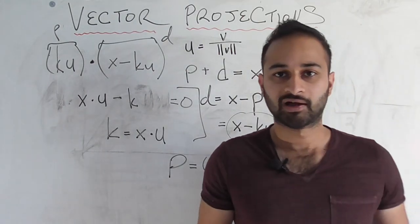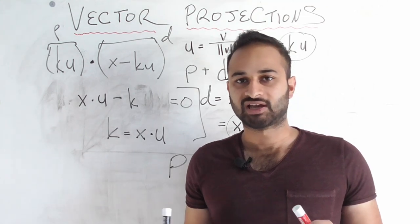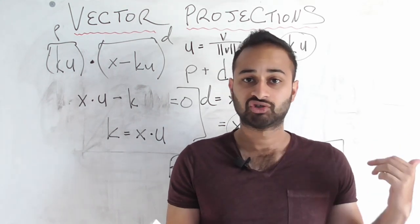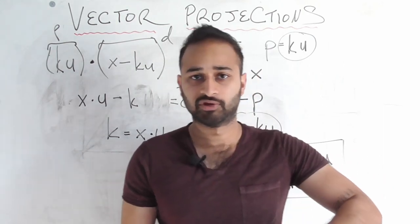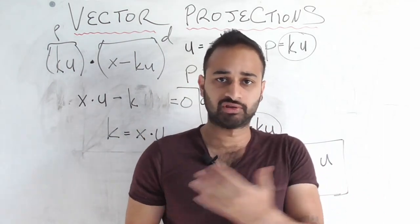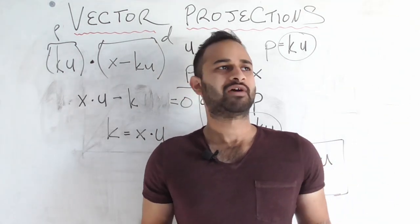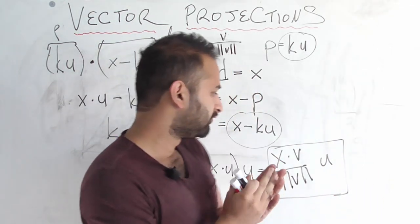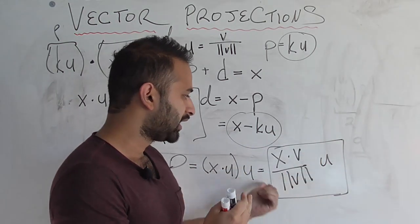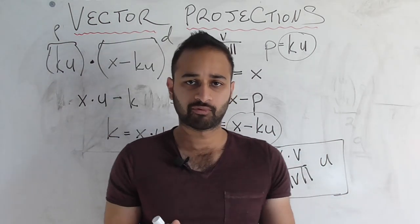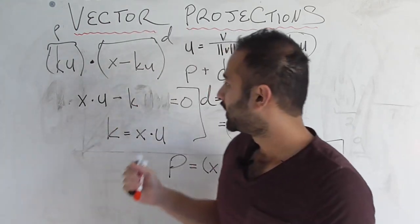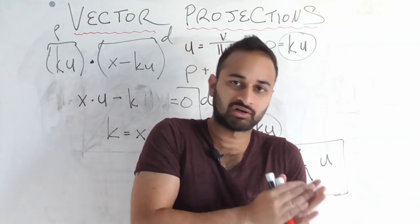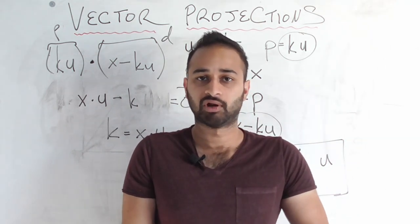The formula looks really ugly, and that's why a lot of students get confused and just memorize it instead of thinking about how they got there geometrically. It took all this work to get from the geometric interpretation to the algebraic one. But going through it means we have a better understanding of how the two are related — the multiplier comes from k = x · u, and the perpendicularity condition between p and d is what forced the dot product to be zero. That's vector projection in a nutshell; we'll be using this concept in principal component analysis.